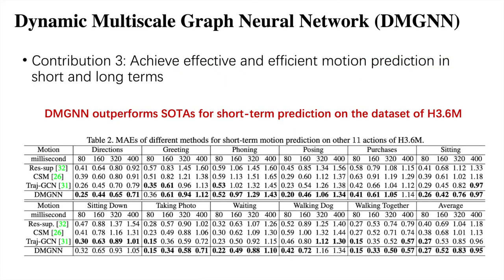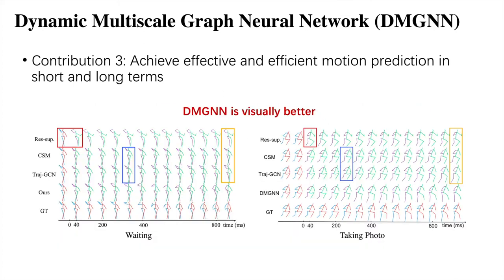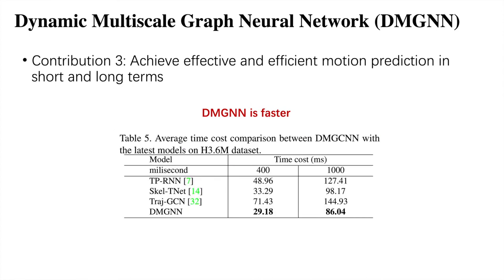Experiments show that our model achieves effective and efficient motion prediction in both short and long terms on two large-scale datasets. For example, our method outperforms state-of-the-art methods for short-term prediction on Human 3.6M, and we achieve competitive results for short- and long-term prediction on the CMU MoCap dataset. We visualize the generated poses and show that our model tends to generate precise and reasonable poses in short and long terms on different actions, such as waiting and taking a bottle. We also demonstrate that our model runs more efficiently than many previous methods, reflecting more practical applications potentially.